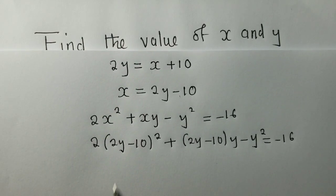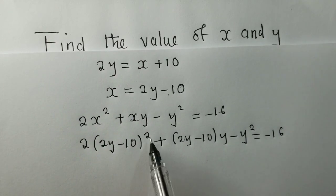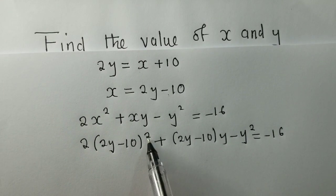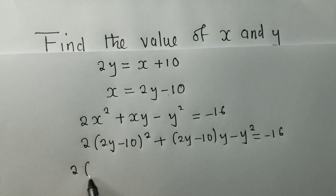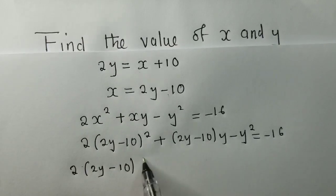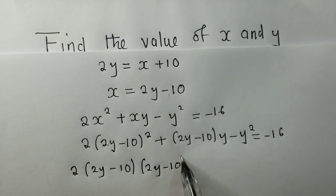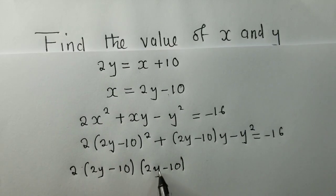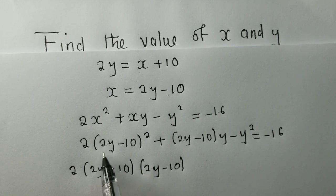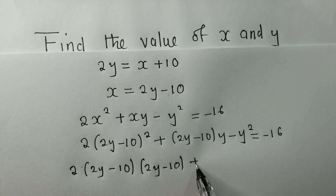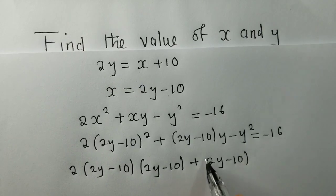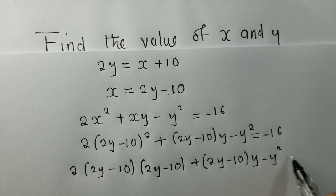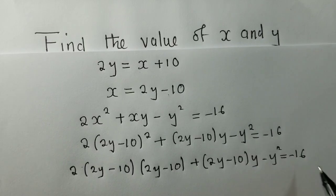Next, we are going to work out this power 2 — we must get rid of it. So what we're going to do is write (2Y minus 10)(2Y minus 10), meaning we multiply this by itself. Then we say plus (2Y minus 10) times Y, minus Y² is equal to negative 16.